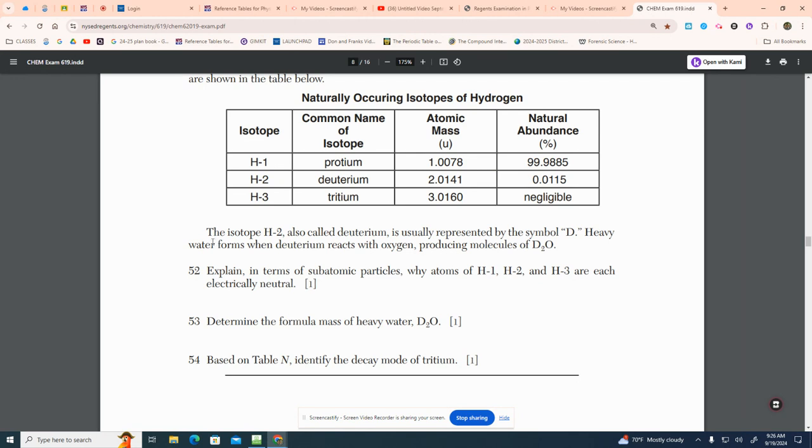Now let's skip down to this. It says, number 52. Explain, in terms of subatomic particles, why H-1, H-2, and H-3 are electrically neutral. Hold on a second. Let everybody think about that for a second. Why are they neutral? And you have to answer that question with the subatomic particles.